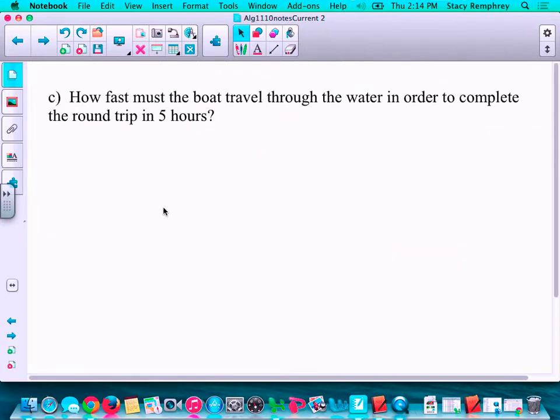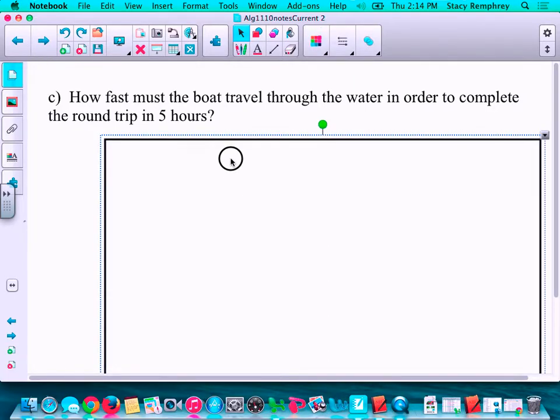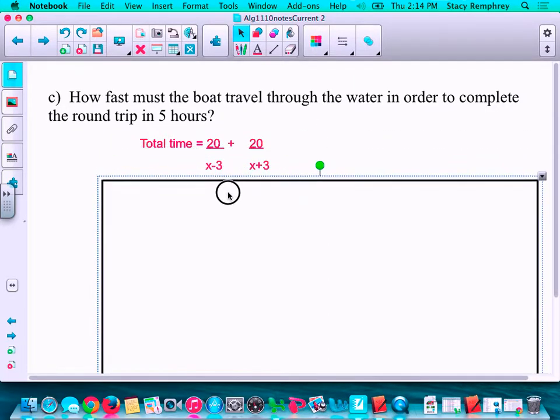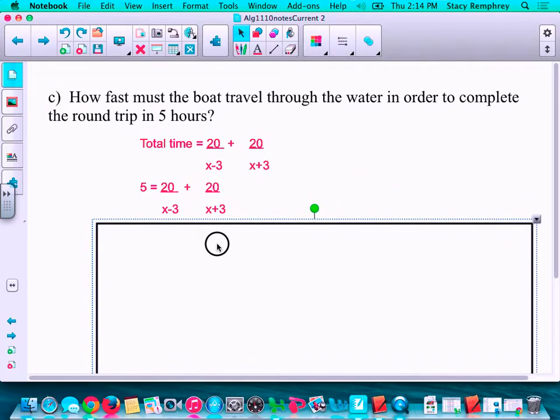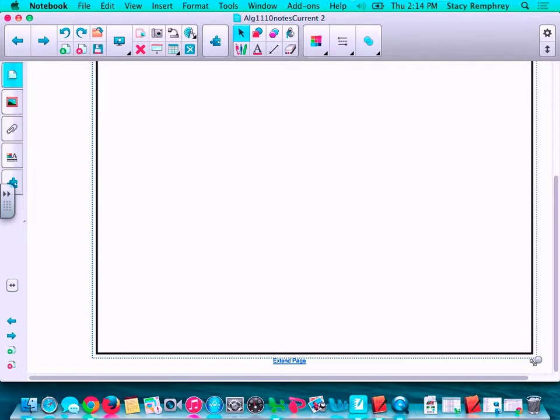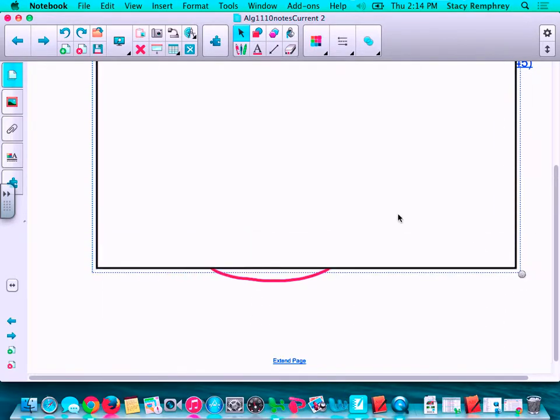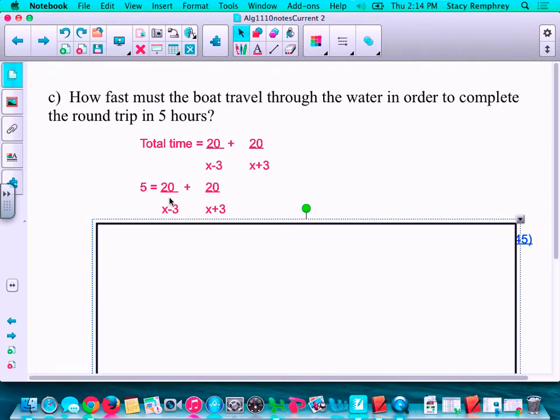For the next one, how fast must the boat travel through the water in order to complete the round trip in 5 hours? So total time, again, this is from the previous slide, the total time is distance divided by rate. So they told me the total time was 5. So I filled that in, but I don't know the rate. So this is my equation.